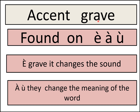Next is the accent grave. Where is it found? It is found on the letters a, e, and u. You can see it is again a slanting line but going the other way. You will find the accent grave only on these three letters. When it is on the letter 'e' or 'o,' it changes only the sound. But when it is placed on 'a' and 'u,' it changes the meaning of the word.